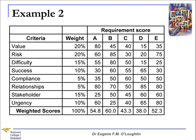Now let's take a look at a second example — a more real example using the eight criteria mentioned earlier. These are listed down along the left hand side. In this particular example, I have five requirements A, B, C, D, and E. I first work out a weighting for each of the criteria that adds up to 100% in total. For example, value and risk are both weighted at 20%, and further down the list compliance and relationships are weighted at 5%. For each requirement I assign a value out of 100 to give it a score.